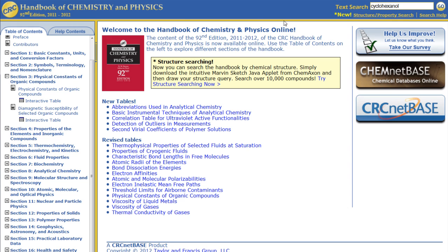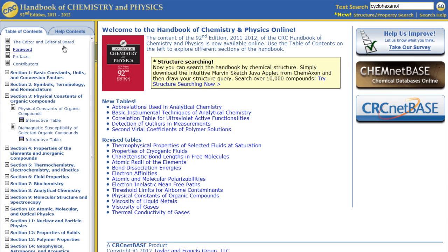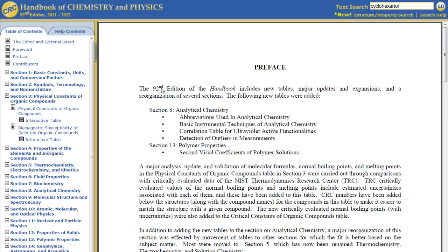Information about how to cite the Handbook of Chemistry and Physics is located under the preface in the table of contents. Click the link and then scroll down to the third page where you will see the recommended form of citation.